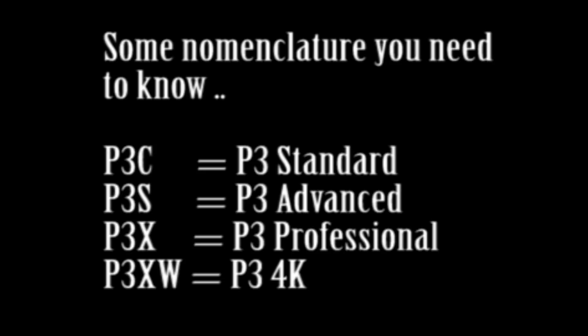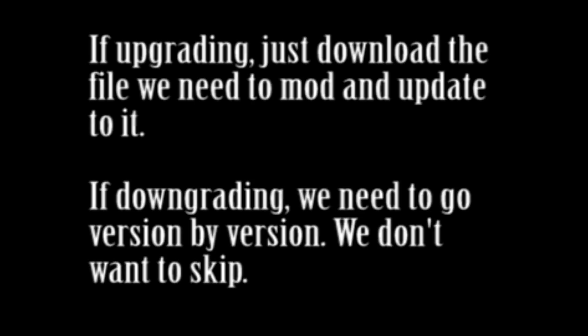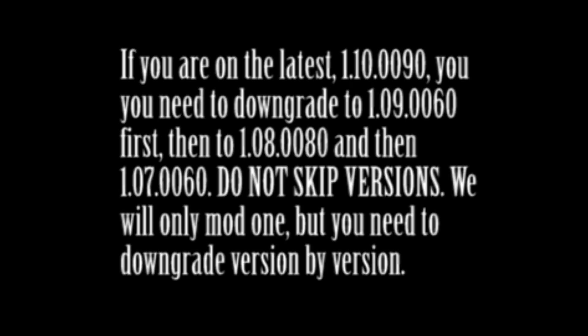Here's some nomenclature. I'm going to be using the P3S, which would be the P3 Advanced. If you're upgrading, just go and download the file. If you're downgrading, we need to go version by version — we want to make sure we don't skip anything. Just an example: if you're on the latest version, downgrade from that to 1.09, then 1.08, then 1.07. Do not skip versions.